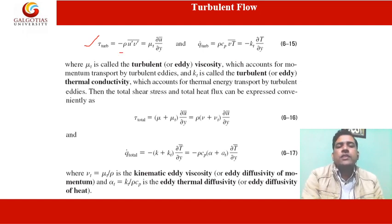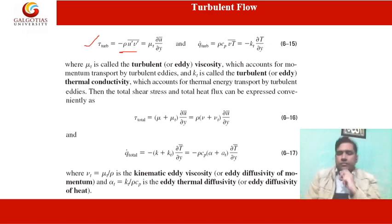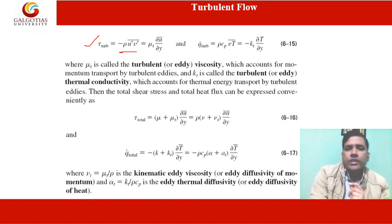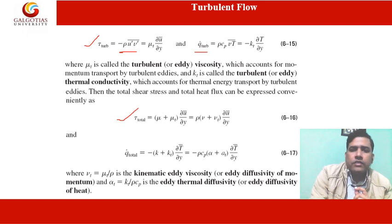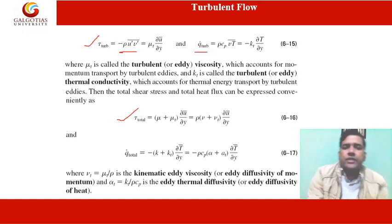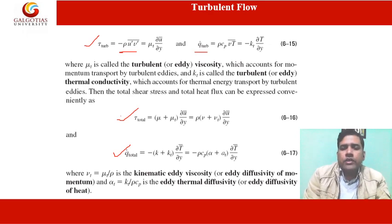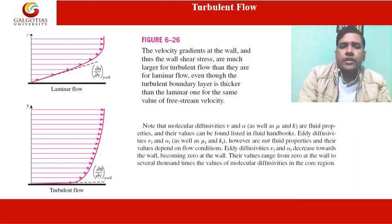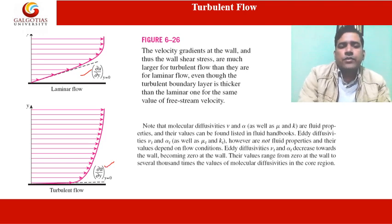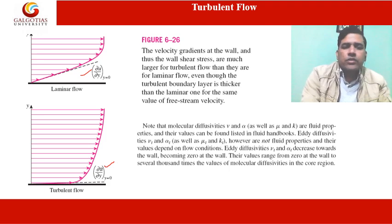The turbulent shear stress tau_turbulent is calculated from the turbulent stress equation. The total shear stress and total heat flux are also derived. Here V_t equals mu_t upon rho, which is the kinematic eddy viscosity or eddy diffusivity of momentum, and alpha_t is the eddy thermal diffusivity. The velocity gradient at the wall is given by the corresponding equation, and the velocity profile of turbulent flow is also shown.